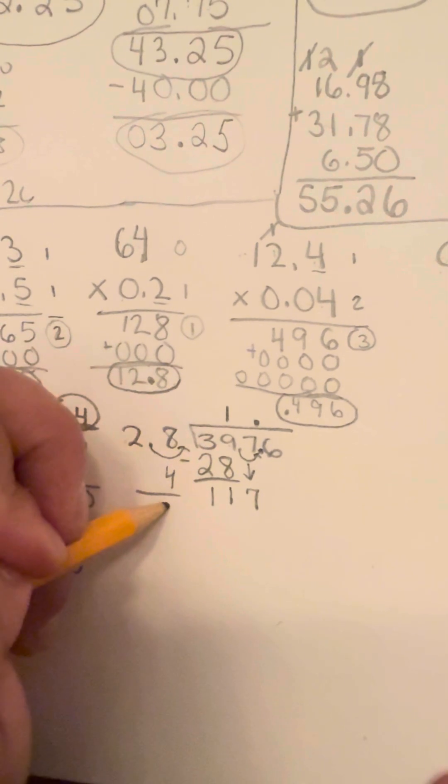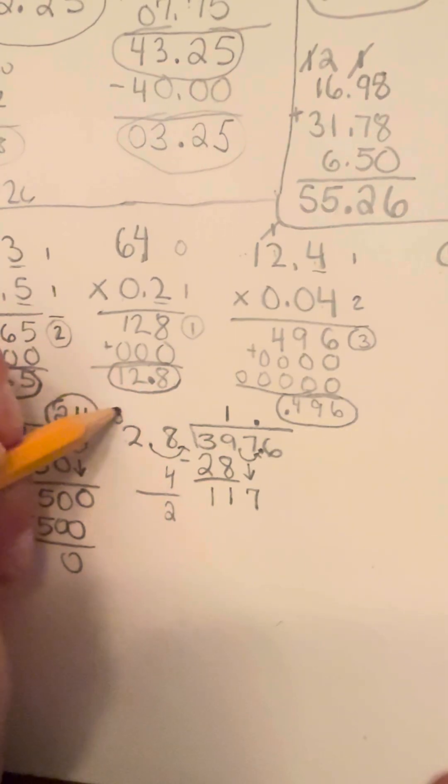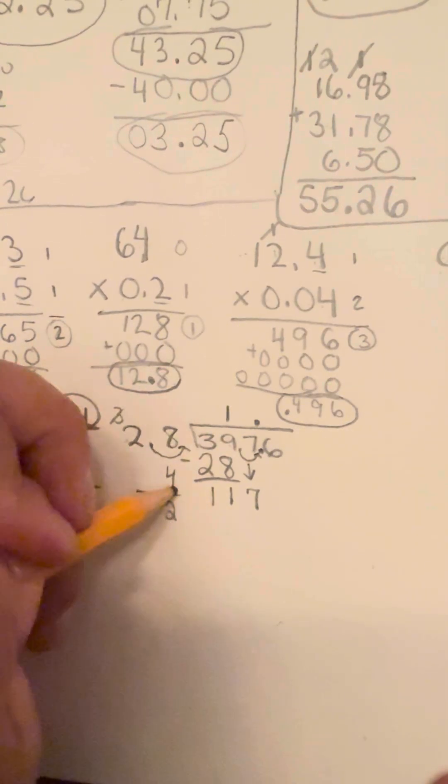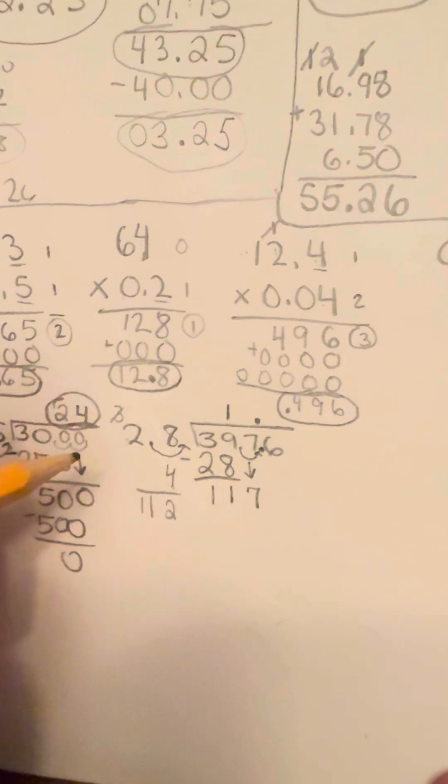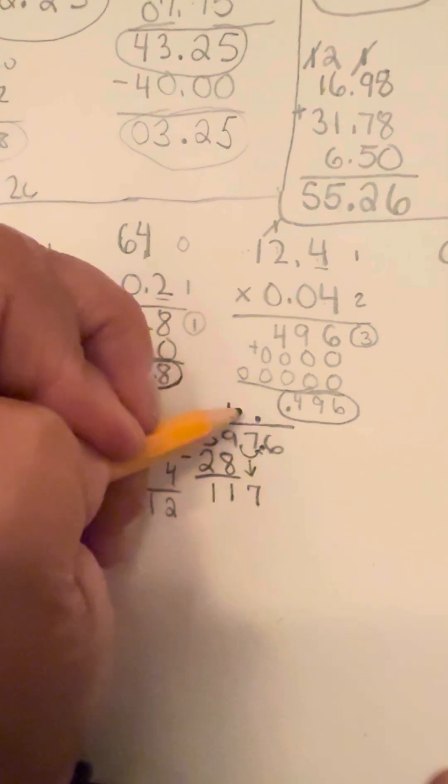So 8 times 4 is going to be 32. Carry the 2. And then you've got 4 times 2 is 8. 9, 10, 11. So that's 112. So 4 will work.